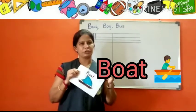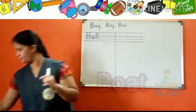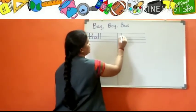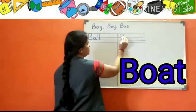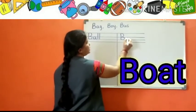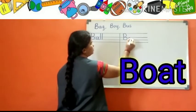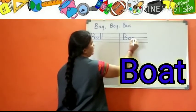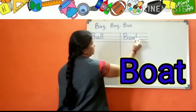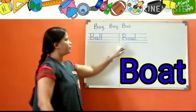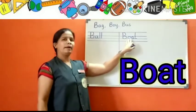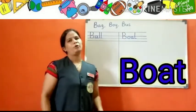Shall we write the spelling of boat children? Right, first letter must be capital B, all other are small. O-A-T. Boat. What is the spelling of boat children? B-O-A-T. Boat.